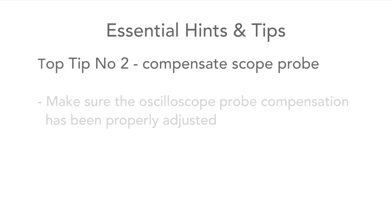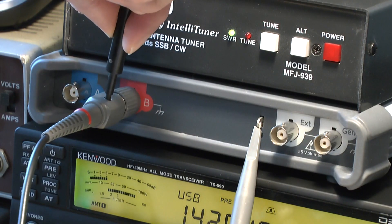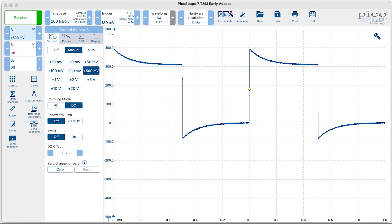Next, make sure that the oscilloscope probe compensation has been properly adjusted. In this way the best trace will be seen on the scope. If the probe isn't compensated properly then the waveform seen won't be the best representation of the signal.